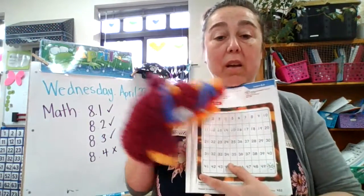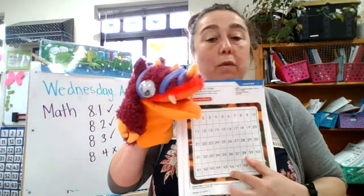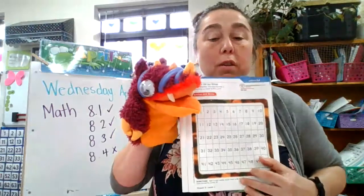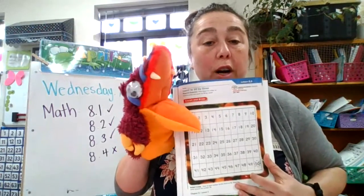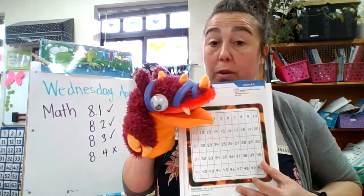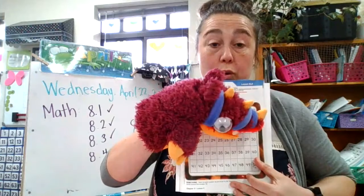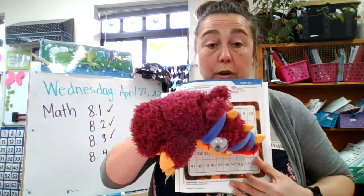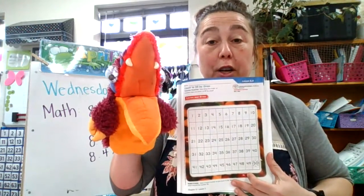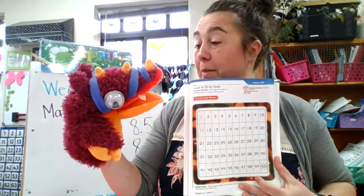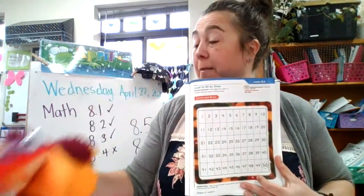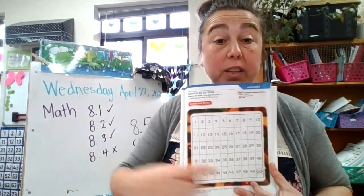Now let's count by ones. Ready? 41, 42, 43, 44, 45, 46, 47, 48, 49. Now slow down, think about it: 10, 20, 30, 40, 50. Good job, Mr. Boggley Eyes. Great job counting to 50, you guys. You can circle that 50.